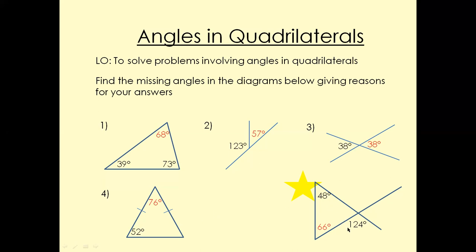For this one, we've got 124 and that's a straight line, so we can find this angle. Then take away 124, and we also know the three angles in a triangle add up to 180. So that will give us the answer of 66 degrees.